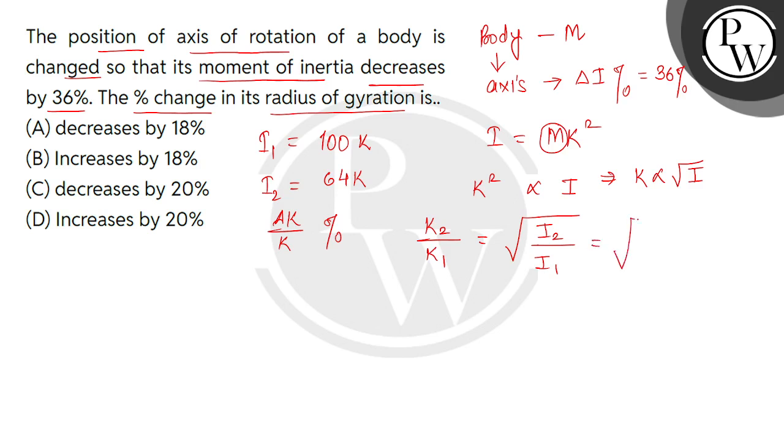Now calculating: k2 divided by k1 equals square root of 64k over 100k, which equals square root of 64 over 100, equals 8 over 10, equals 4 over 5. Because we have to find the decrease...